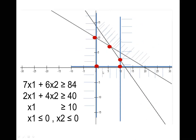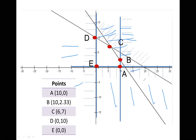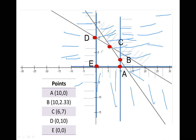Now we have five constraints in total. The first two are the non-negative constraints. Then x1 less than or equal to 10 is highlighted. Then 7x1 plus 6x2 less than or equal to 84, and 2x1 plus 4x2 less than or equal to 40 are both highlighted against the sign. The remaining unhighlighted area is the solution area — we call this the feasible region. The feasible region is the region satisfying all constraints.